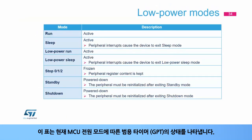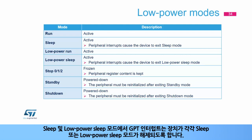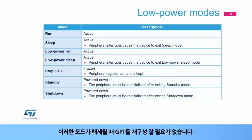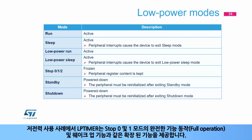This table indicates the state of the general purpose timers according to the current MCU power mode. In run, low power run, sleep, and low power sleep modes, the general purpose timers are active. In sleep and low power sleep modes, GPT interrupts cause the device to exit the respective mode. In stop 0, 1, and 2 modes, the general purpose timers are frozen; peripheral register content is kept and no reconfiguration is needed when exiting. In standby and shutdown modes, the general purpose timers are powered down and must be reinitialized. For low power use cases, the LP timer offers extended features such as full operation and wake-up capabilities in stop 0 and 1 modes.